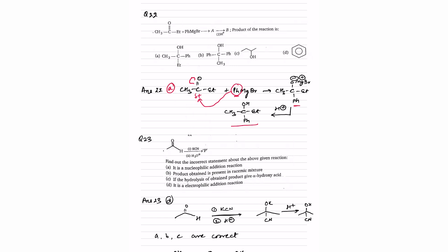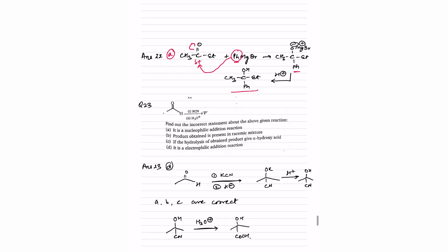Question number 23: acetaldehyde is reacted with KCN and then H3O+. This is a nucleophilic addition reaction where CN minus attacks the carbonyl carbon, K+ neutralizes the oxygen forming O-K and CN. Then H+ replaces K to form OH and CN — giving the cyanohydrin product.